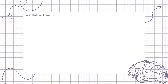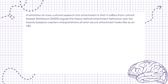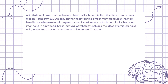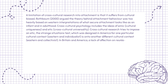A limitation of cross-cultural research into attachment is that it suffers from cultural bias. Rothbaum (2000) argued the theory behind attachment behavior was too heavily based on Western interpretations of what secure attachment looks like in infancy and adulthood. Cross-cultural psychology includes the ideas of emic (cultural uniqueness) and etic (cross-cultural universality). Cross-cultural research tries to impose an etic approach — the strange situation test, which was designed in America for a Western and individualist cultural context — onto a different cultural context, Eastern and collectivist. In Britain and America, a lack of affection on reunion indicates avoidant attachment; however, in Germany such behavior would be more likely interpreted as independence rather than insecurity.